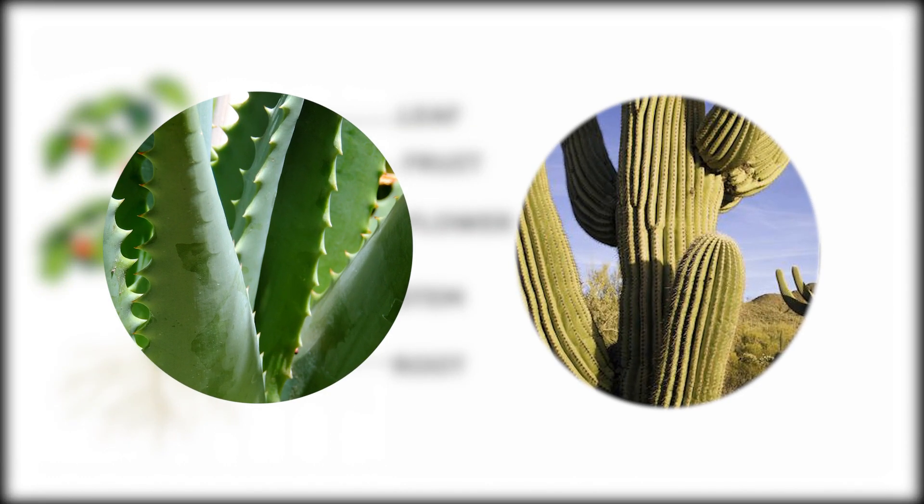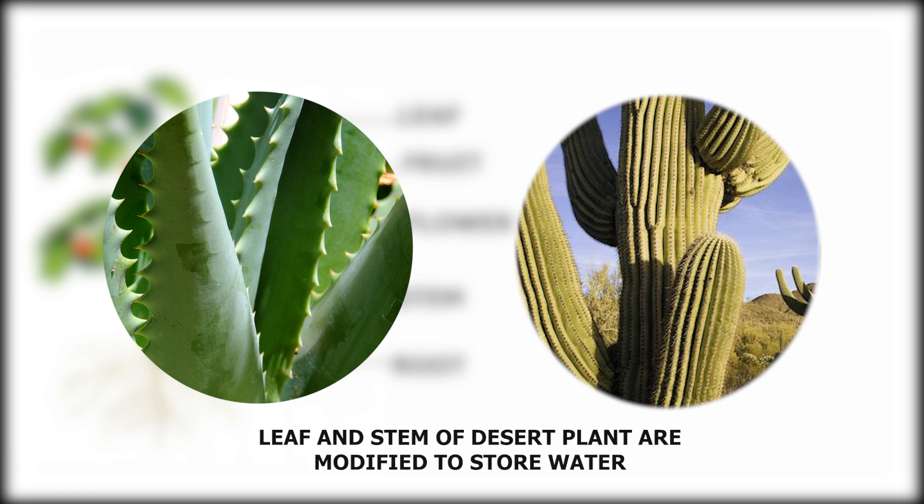For example, generally stems provide support to plants. But the stem of a desert plant additionally stores water. Here, plants have adapted to hot climate by modifying the stem's function.